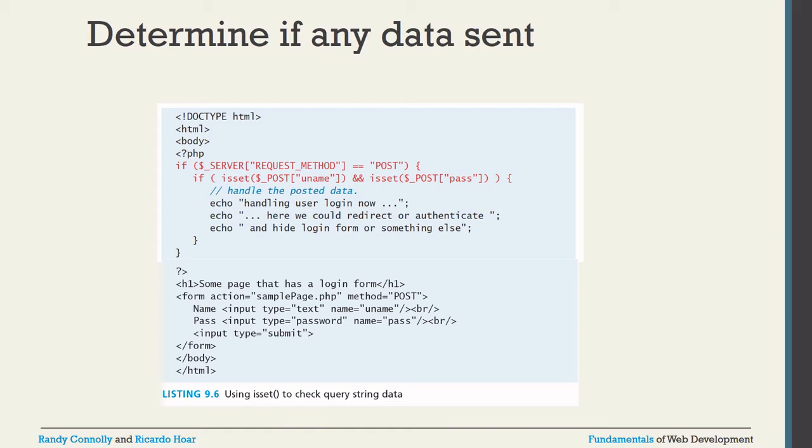You can also check isset($_POST['password']) to confirm both values are available. isset() checks whether data has been sent by the client to the server. The $_POST prefix indicates the POST method was used, while $_GET indicates the GET method. GET method values are always passed along with the URL; POST method values are not visible in the URL.